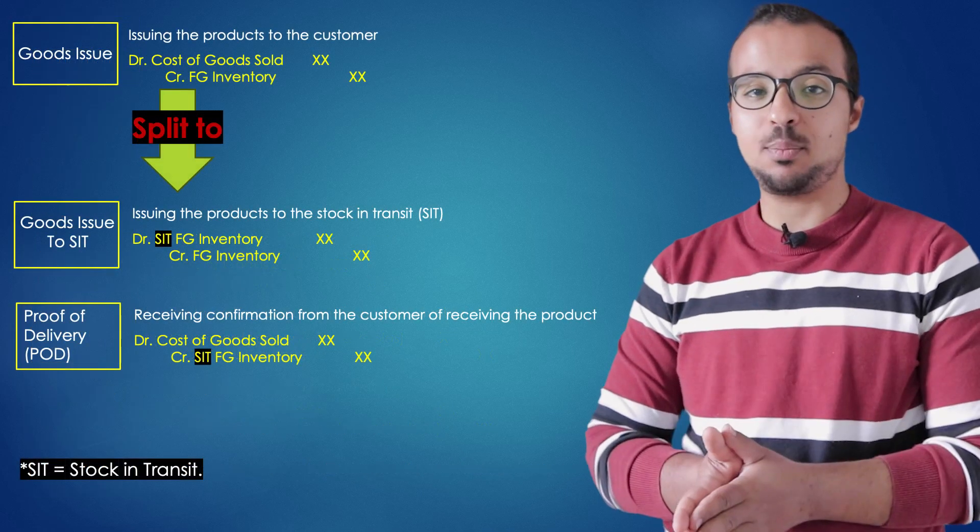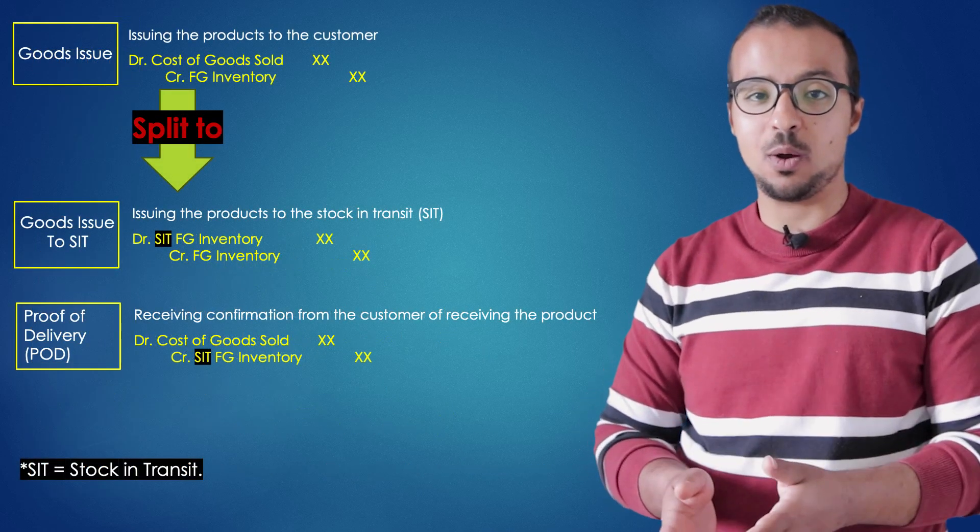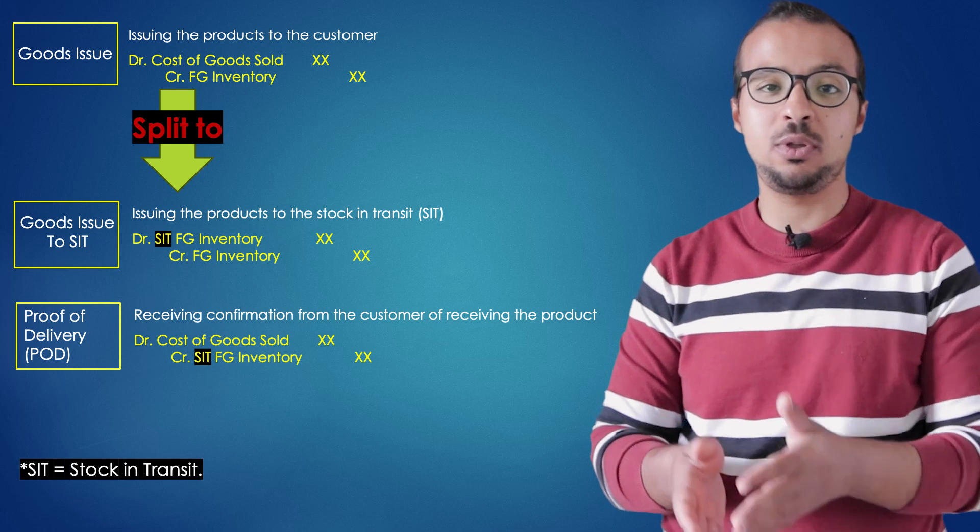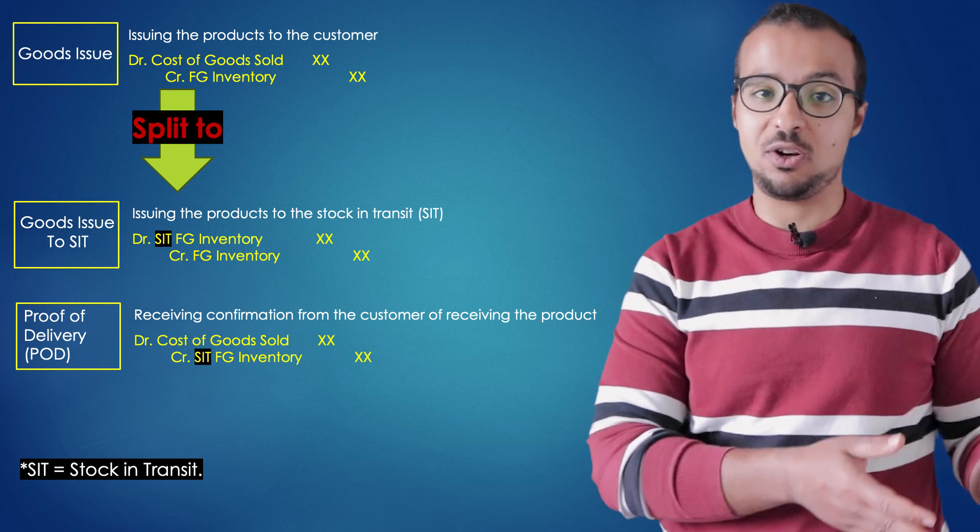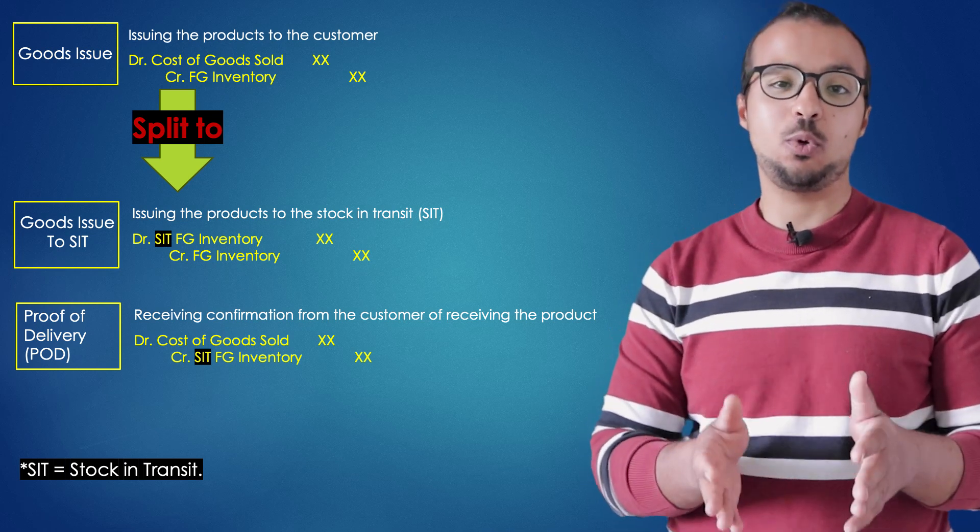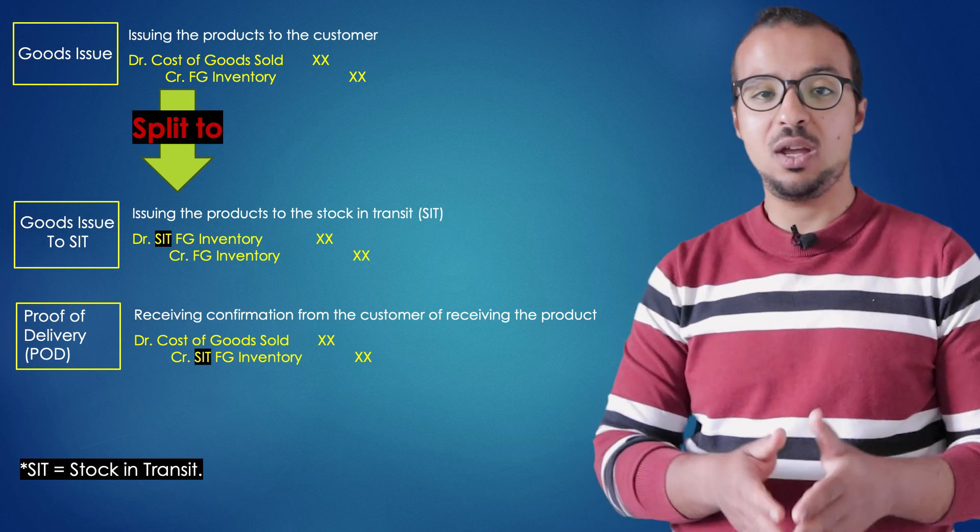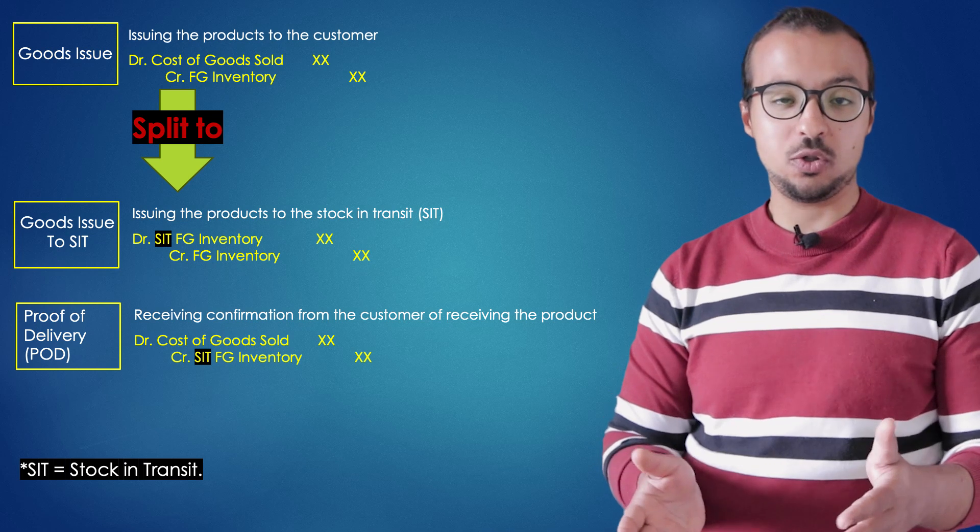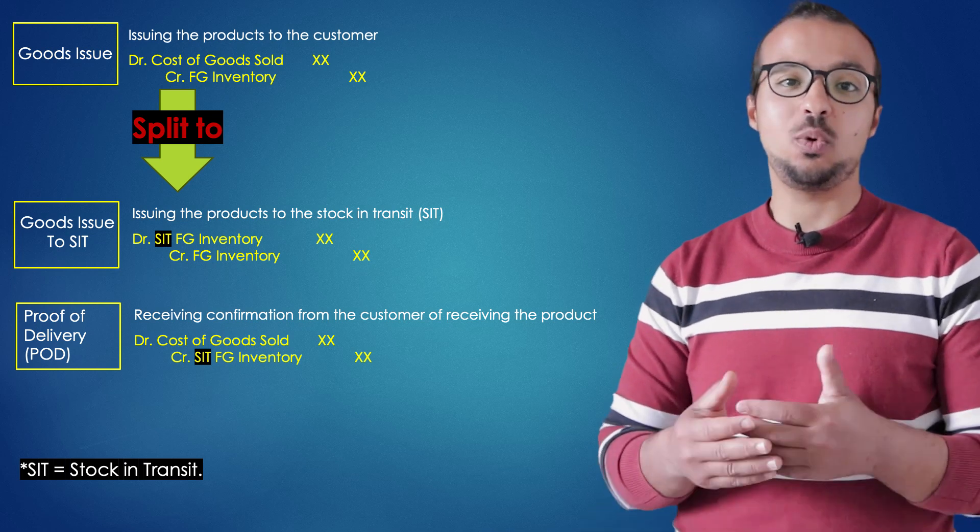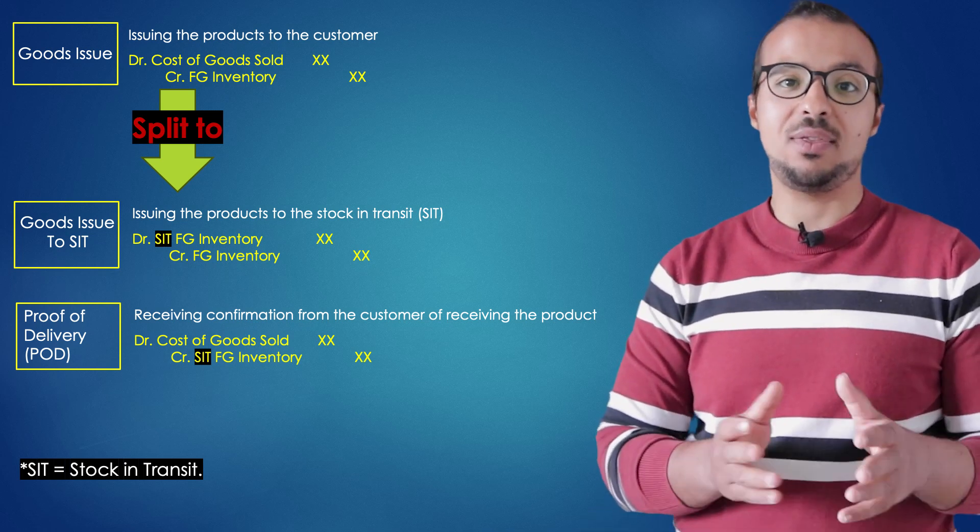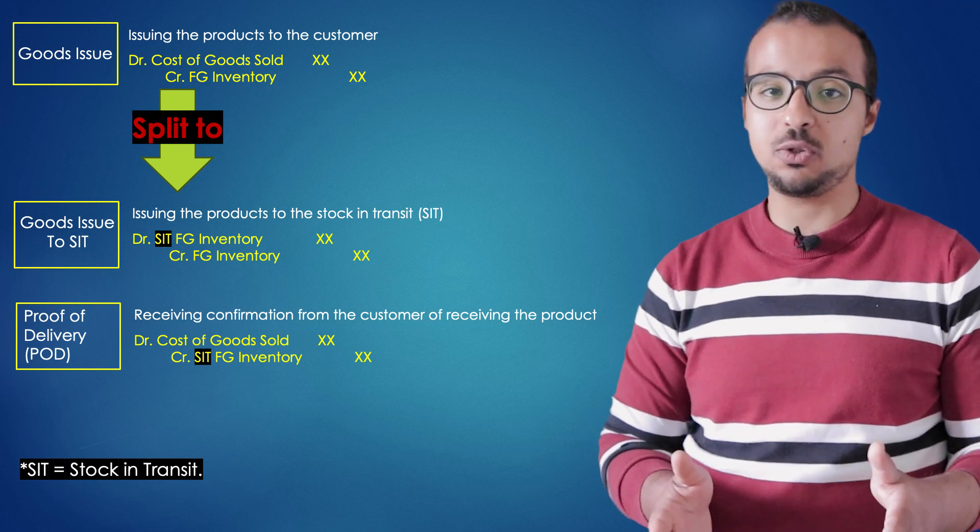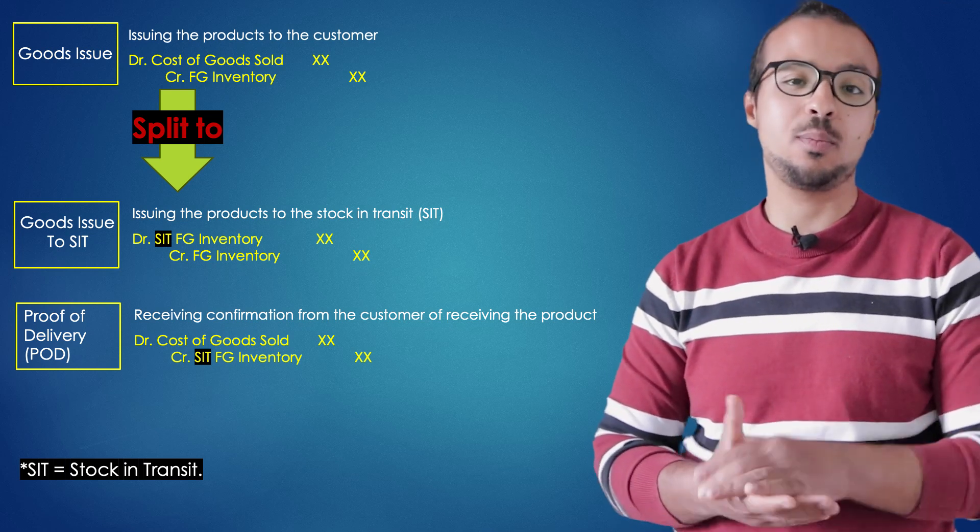In the first step, we issue the products from our warehouse into the transportation method that will take the products to the delivery location. At this time, these products are considered as stock in transit. Here we have an accounting entry that will credit our normal stock, so we have credit inventory and debit stock in transit. This we can see in all our financial records and also in the inventory reports on the system.